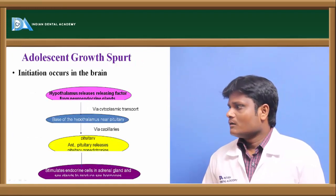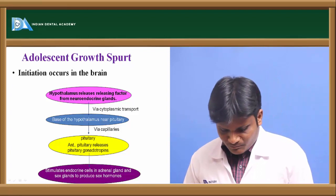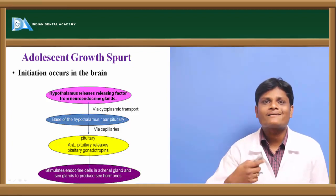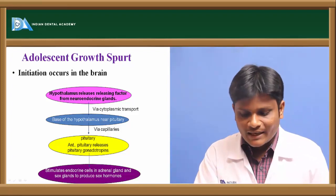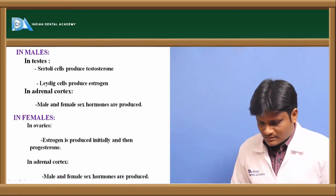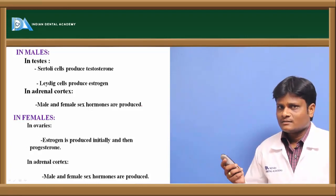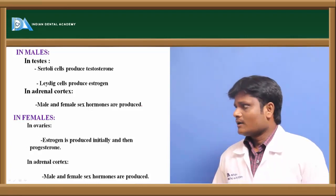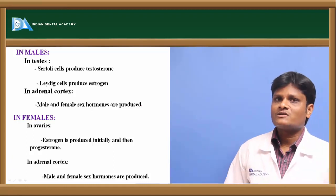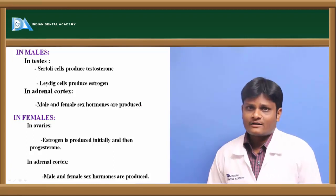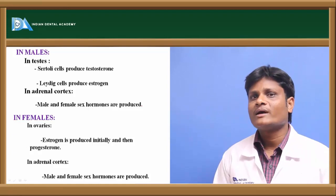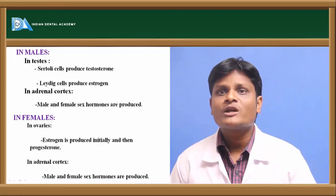The reason females mature earlier is the existence of a weak androgen called dehydroepiandrosterone (DHEA) or androstenolone, which appears at adrenarche in females. At adolescence, the pituitary gland secretes stimulating hormones that activate gonadal and adrenal hormones, leading to accelerated growth. In males, the Sertoli cells in the testes secrete testosterone, while Leydig cells secrete estrogen; in females, estrogen is produced initially followed by progesterone, and the adrenal cortex secretes adrenal hormones.